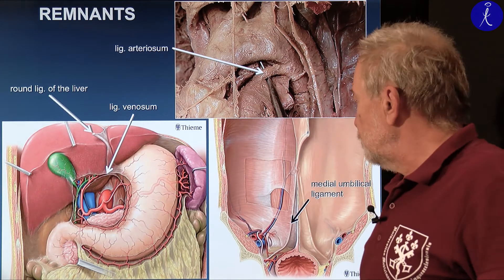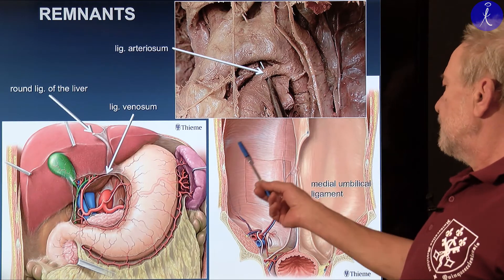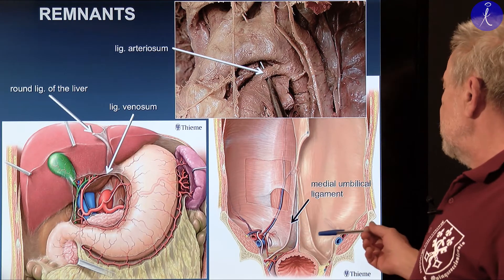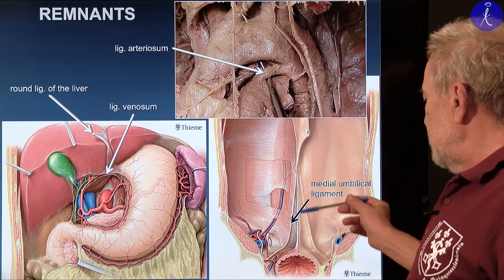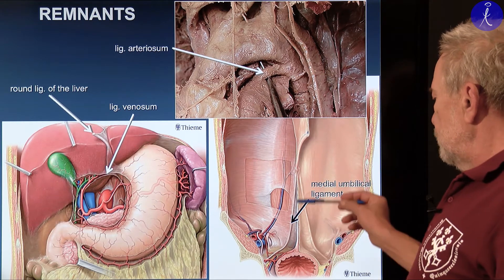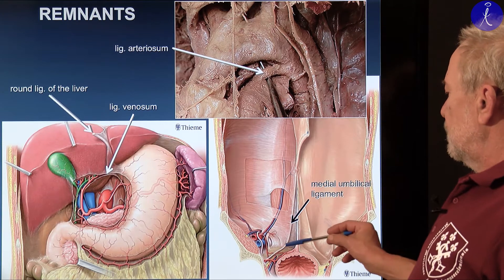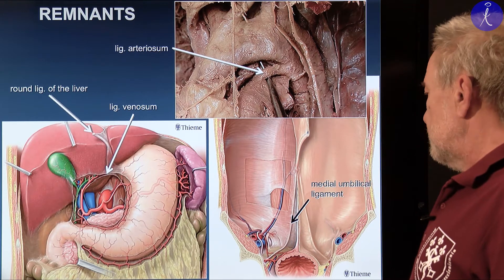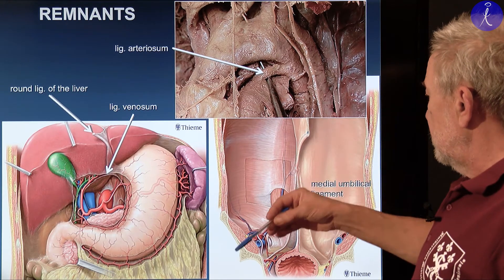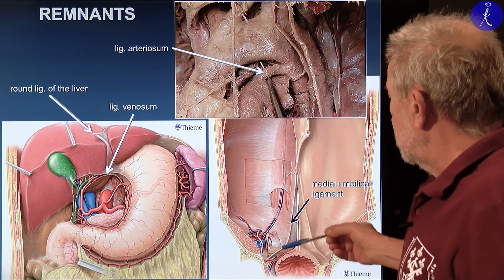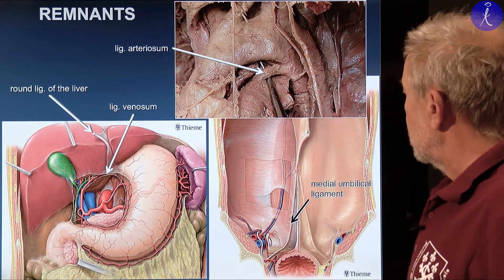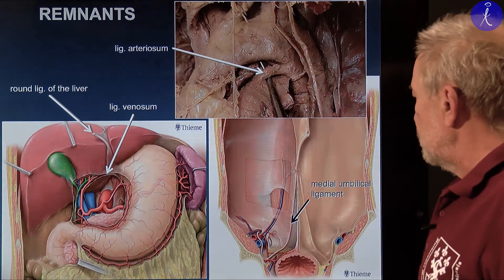Now, here comes the one which is paired. If you remember the inner surface of the abdominal wall, you recall the umbilical folds: one median, two medial, and two lateral umbilical folds. In the medial umbilical folds is the obliterated umbilical artery — the medial umbilical ligament. This runs from the body of the fetus towards the umbilicus, carrying the used deoxygenated blood during embryonic life.